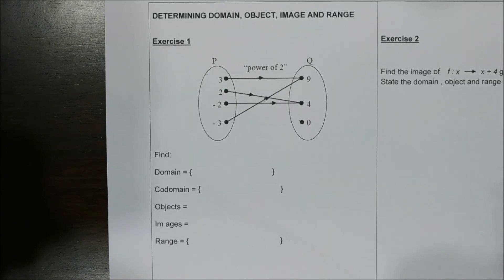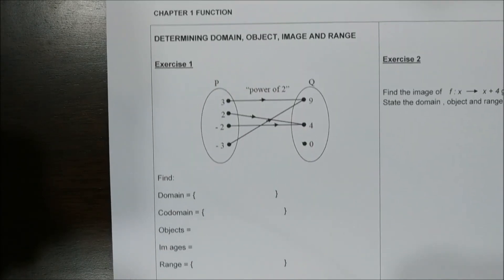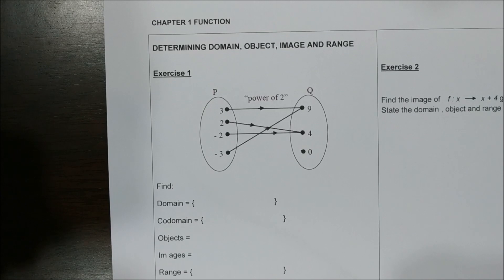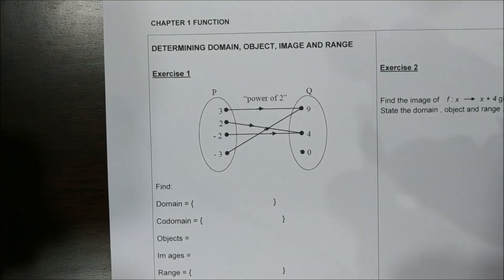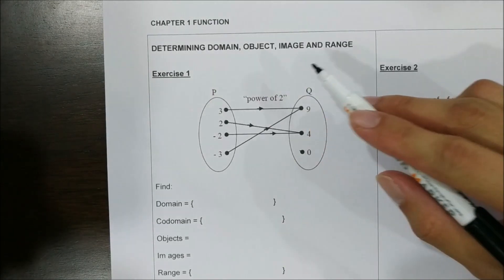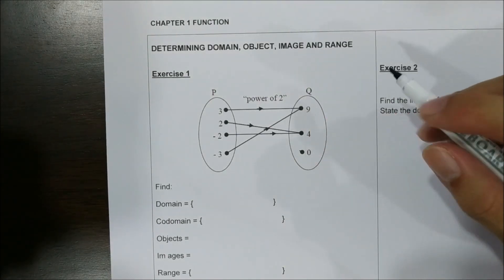Hello everyone. Today we are going to look at Additional Maths Form 4, Chapter 1, which is Functions. This is one of the subtopics: determining domain, object, image, and also the range.